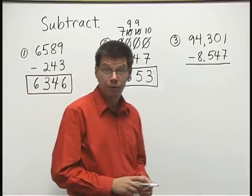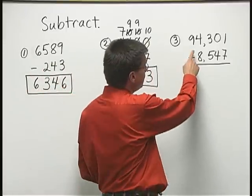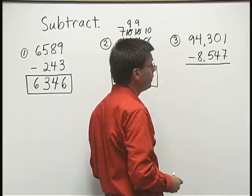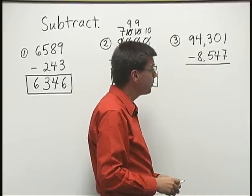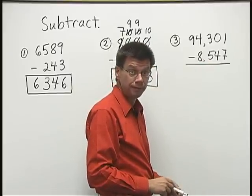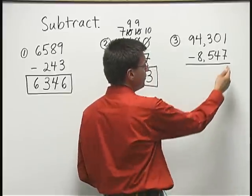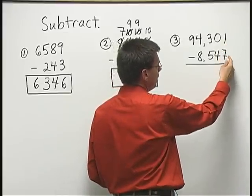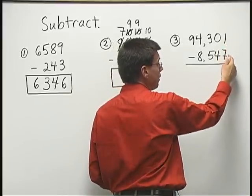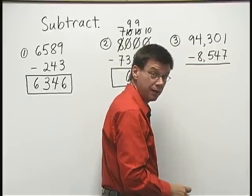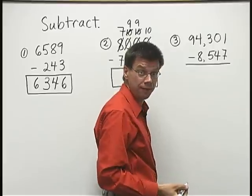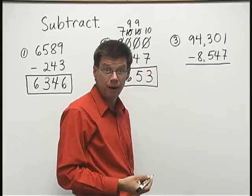Now, let's do problem number three. Ninety-four thousand three hundred one minus eight thousand five hundred forty-seven. Again, we want to start in the ones place. We'd like to be able to take one minus seven. But we can't take away seven from one. So, we need to borrow.